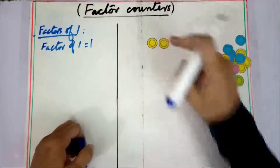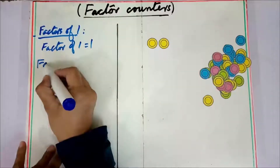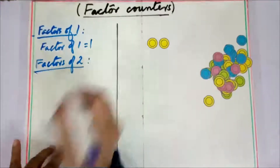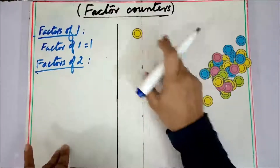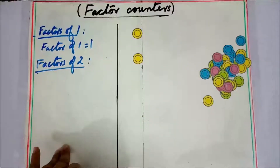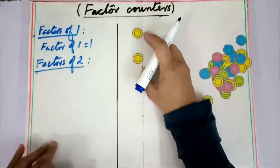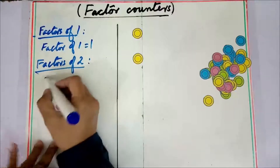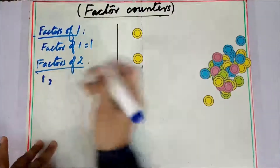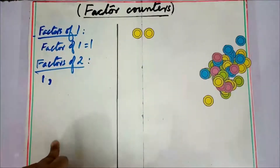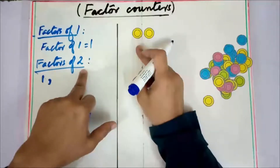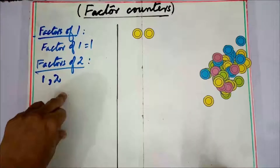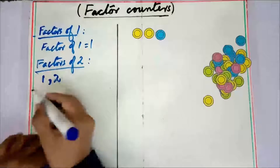Now I am taking two counters to find out the factors of two. First, you can make two groups of one — one divides evenly into two, so one is a factor of two. You can also make one group of two — two divides evenly into two. So the factors of two are one and two.